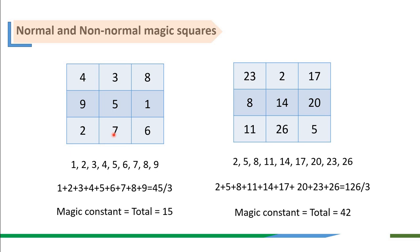The magic constant for this 3×3 magic square is 15. For the right side, it is a shifted sequence: 2, 5, 8, 11 and so on, adding 3 to each earlier number to get the next number. The left one is a normal magic square while the right one is a non-normal magic square. A non-normal magic square uses a different set of numbers such as multiples or a shifted sequence.